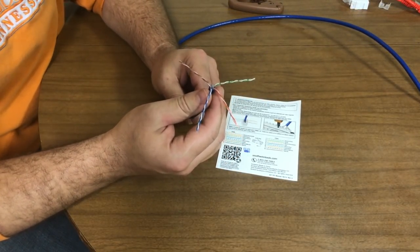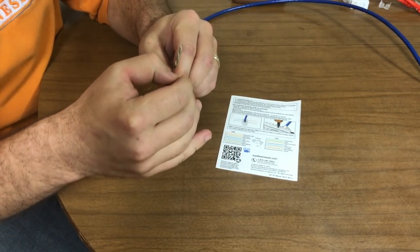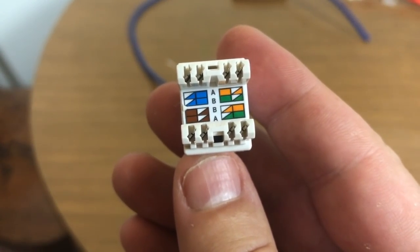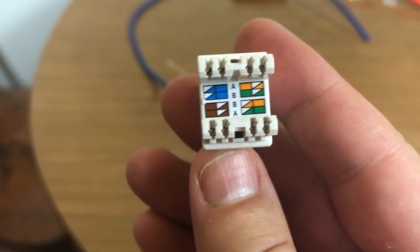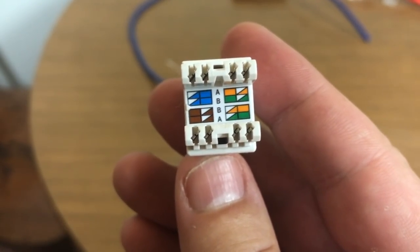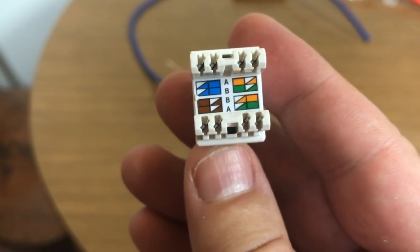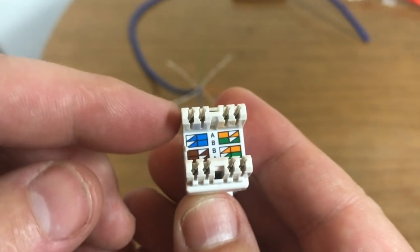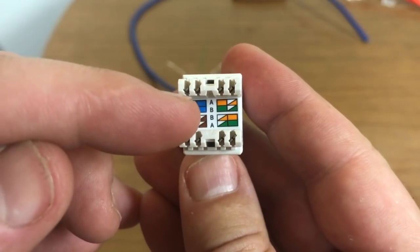Now let's untwist our twisted pairs. Now that we have our twisted pairs untwisted, let's look at the back of the keystone. As you can see, the wiring scheme for both the A and the B are on the back of the keystone. So all I'm going to do is simply match the colors per these slots with the correct wire based upon what it's telling me here for the B.